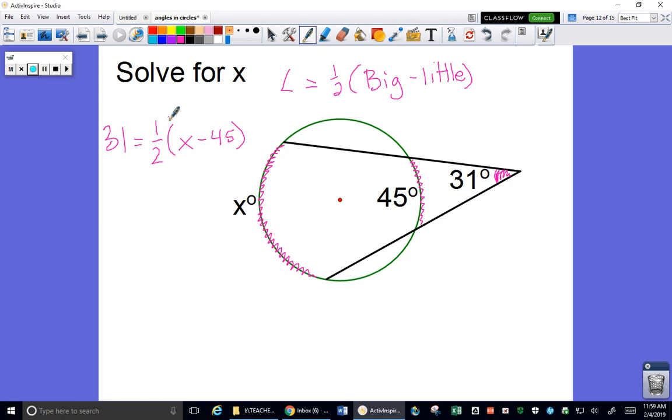That says the angle 31 equals half of the big arc x minus the little arc 45. My first algebraic step is to multiply by 2 to get rid of that wretched one half. 31 times 2 is 62 equals x minus 45. Now I add 45 to both sides, and I find x to be a wonderful 107 degree arc.